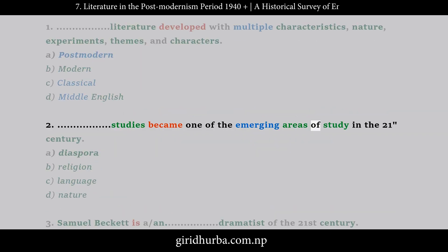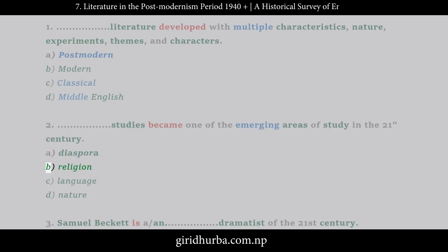Question 2: Studies became one of the emerging areas of study in the 21st century. A. Diaspora. B. Religion. C. Language. D. Nature.